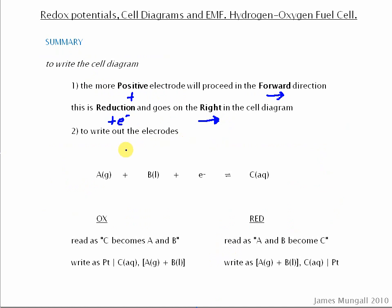Now, to write out the electrodes, this is also a convention, I suppose. If we have A plus B, that's a gas and a liquid in equilibrium, we're going to see, which is AQ, then it might be that we're going to see this is going to be the reduction, if it's the more positive electrode, or it could be that it's the oxidation. Well, let's start off by saying it's the reduction. If it's the reduction, we can read that as A plus B becomes C. A and B becomes C.